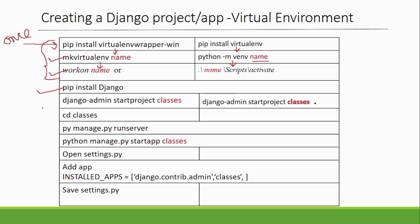After installing Django, you will create a Django project. The command is: django-admin startproject [project name]. You can give it any name — classes, courses, e-commerce, blog, whatever you want. The project name will change depending on your project.